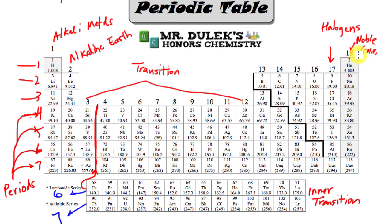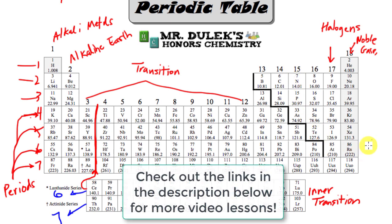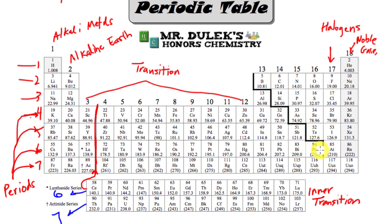Your periodic table should be numbered 1 through 18. So if I say group 18, I'm talking about noble gases; group 2, I'm talking about alkaline earth metals. Period 5 would be this horizontal row. There are metals on the left-hand side — the stair step here kind of breaks up your metals and your non-metals. You have the metals on this side of the periodic table, non-metals on the other side. Along the stair step are your metalloids, which have properties of both metals and non-metals. Aluminum is not a metalloid — it is a metal, so keep that in mind.